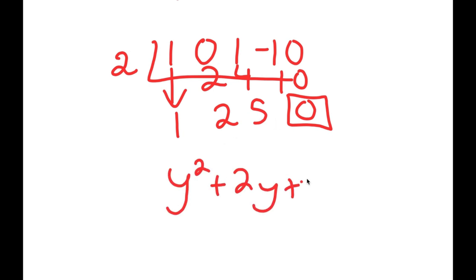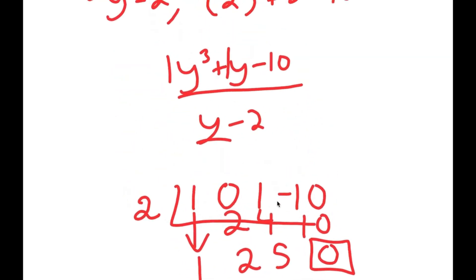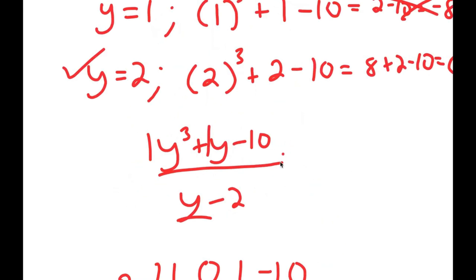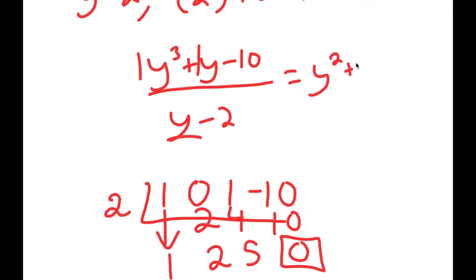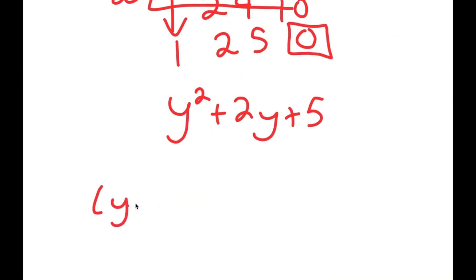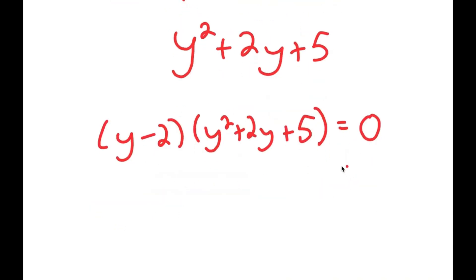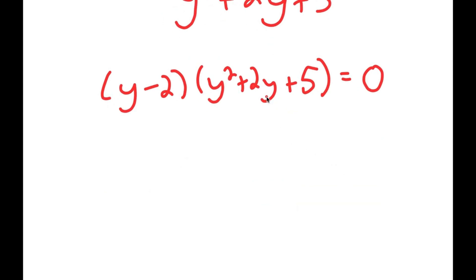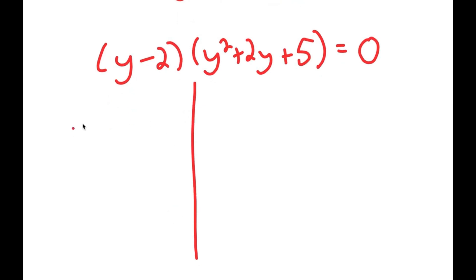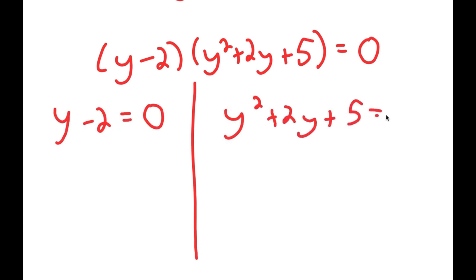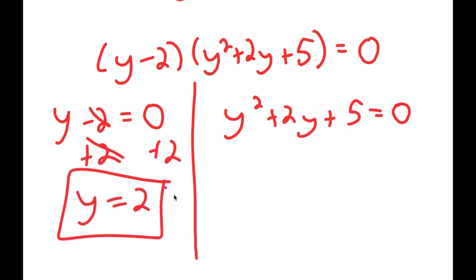So y cubed plus y minus 10 divided by y minus 2 is equal to y squared plus 2y plus 5. This means y minus 2 times y squared plus 2y plus 5 is equal to 0. Using this equation, we can find all our solutions. I get two equations: y minus 2 equals 0, and y squared plus 2y plus 5 equals 0. For y minus 2 equals 0, I add 2 on both sides and get y equals 2, which is a solution we already found.